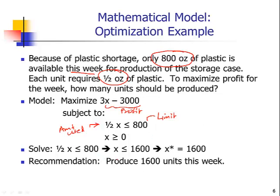This problem is actually very simple, so you don't need the computer. The more storage cases you make — the higher the X value — the higher the profit will be. So we want to make as many as we can given the limit on plastic. Solving (1/2)X ≤ 800 gives X ≤ 1,600. Since we want to maximize the number of units made, we let X equal the maximum allowed: 1,600. So the answer is we should produce 1,600 units this week.